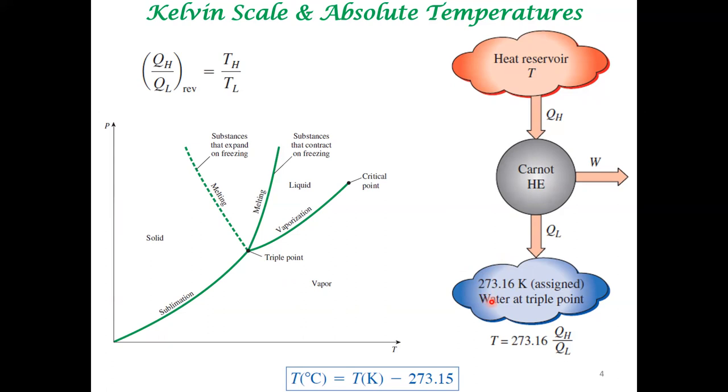Here you are assigning a value of 273.16. With this, we can convert the Celsius scale to the Kelvin scale. This can be done. For example, steam point in the Celsius scale is 100. The steam point in the Kelvin scale would be approximately 373.15 and so on.